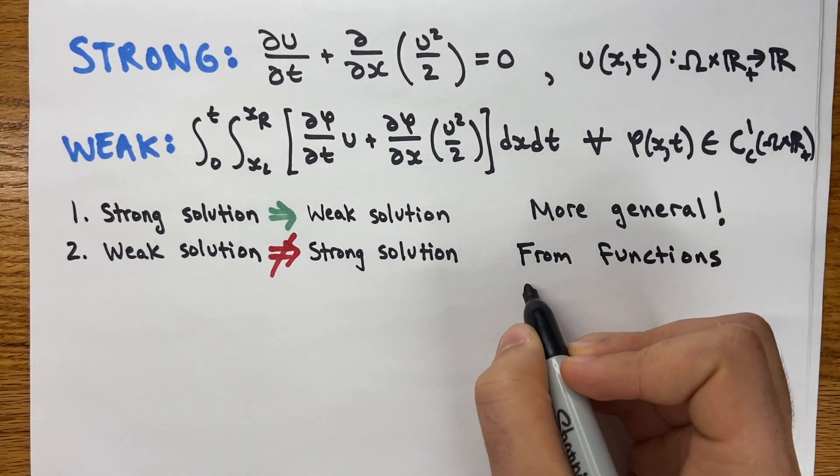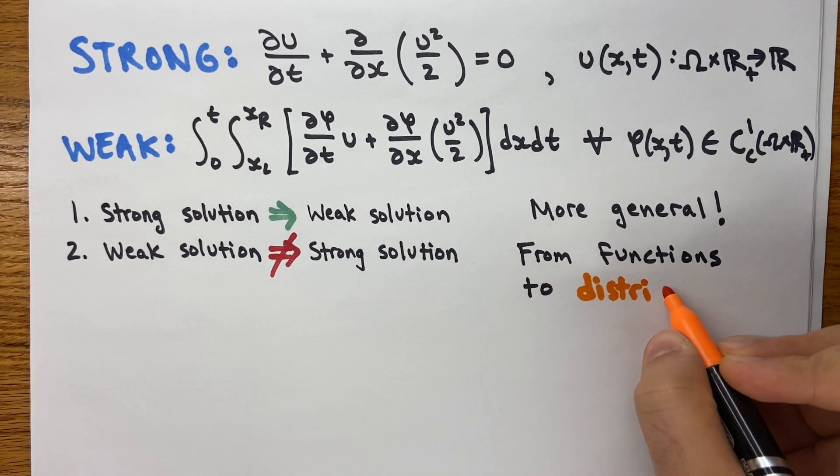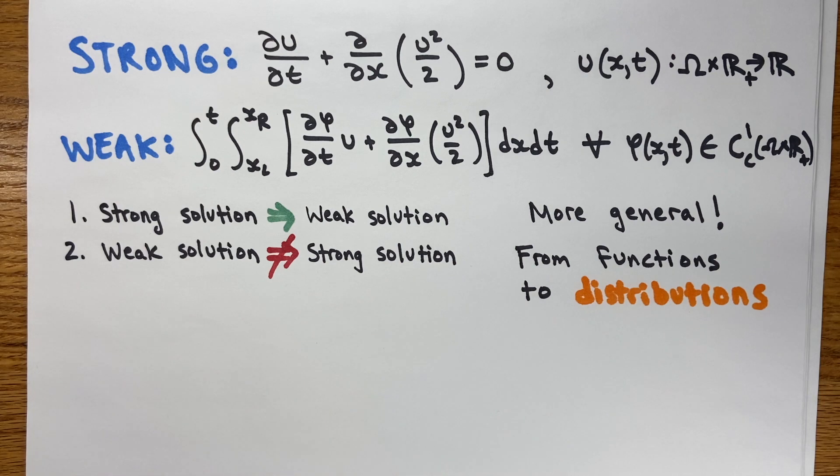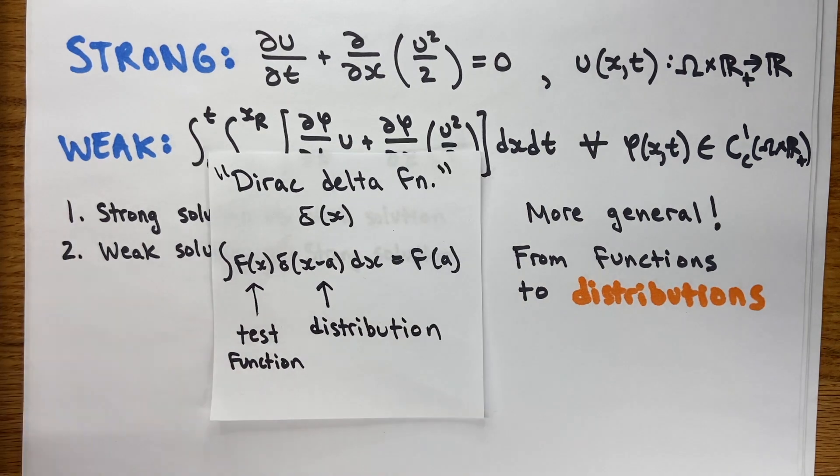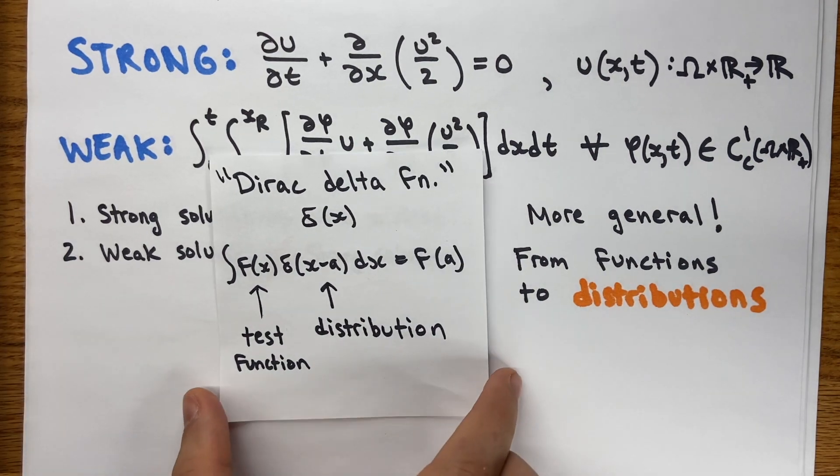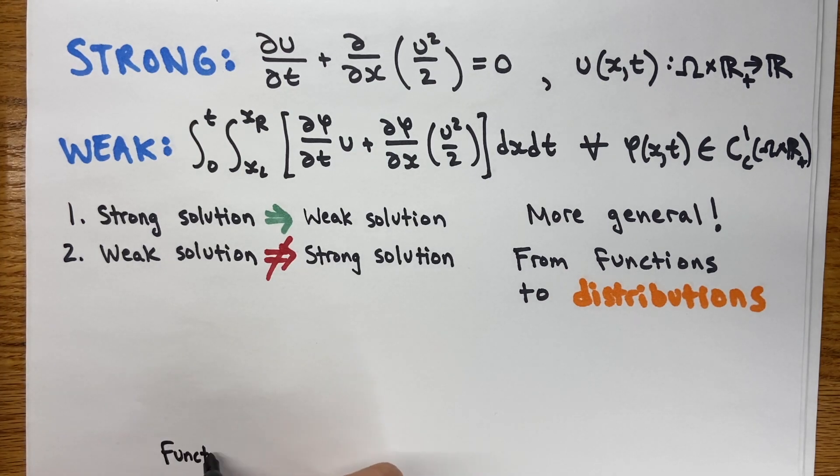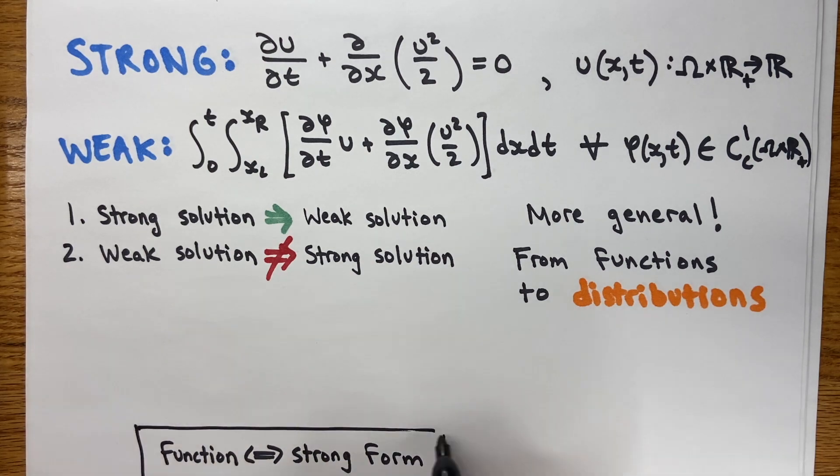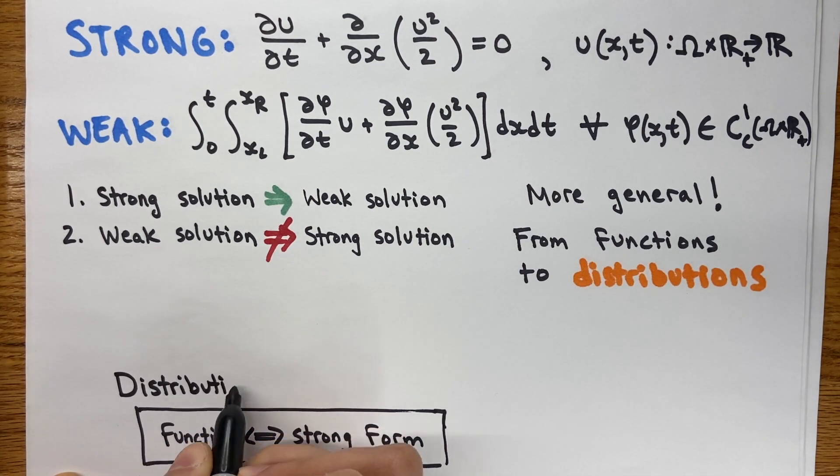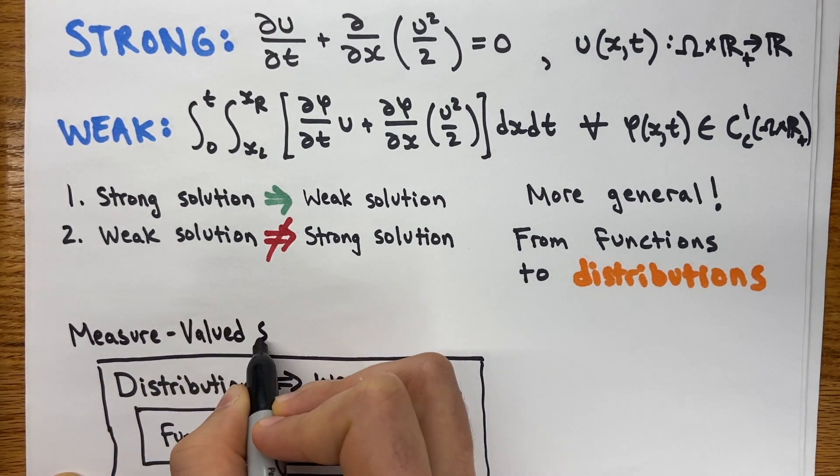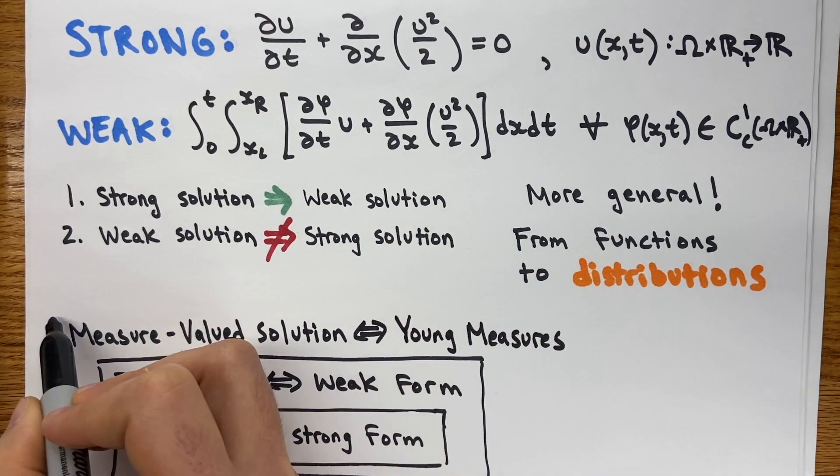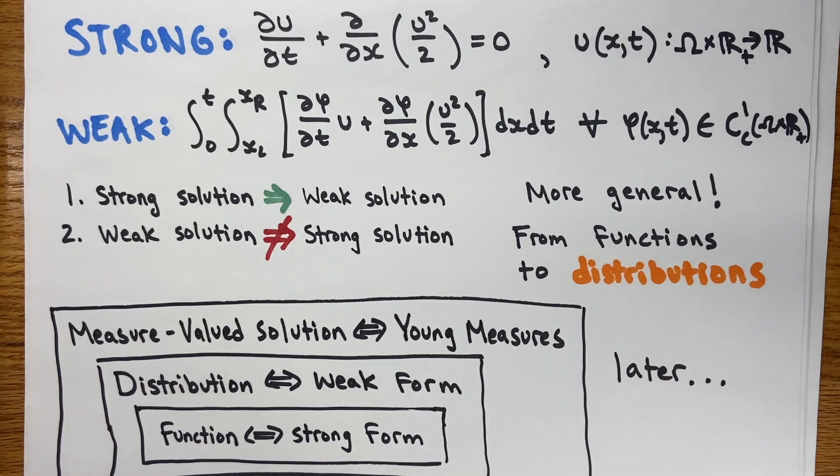These more general solutions don't even have to be functions. We call these more general solutions distributions. Now that's really just a fancy word for something that can only be defined if you integrate it alongside a test function. So side note, remember that delta function from physics class that seems to pop up everywhere? It's actually also a distribution because it only makes sense when you integrate it alongside another function. So moving away from the strong form of the PDE and by using the weak form instead, we allow for more general solutions, just like shock waves for the Euler equations of gas flow. And that's not even the end. We can keep loosening the restrictions on our PDE and get more and more general solutions, but maybe we'll leave that for a later video.